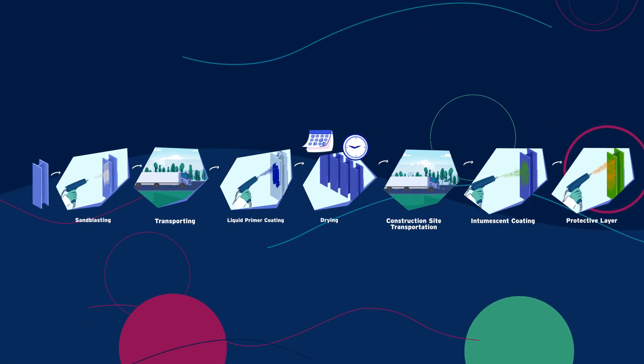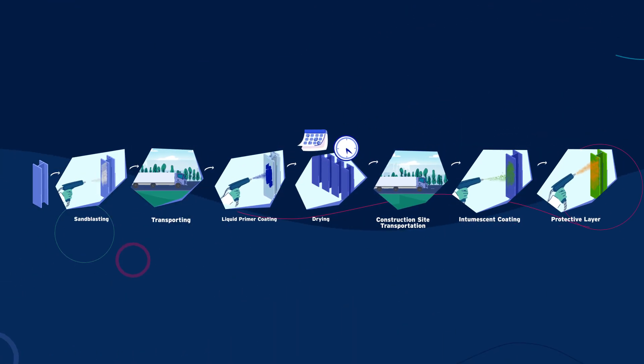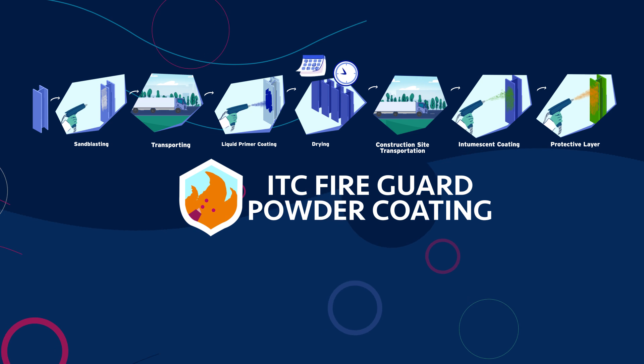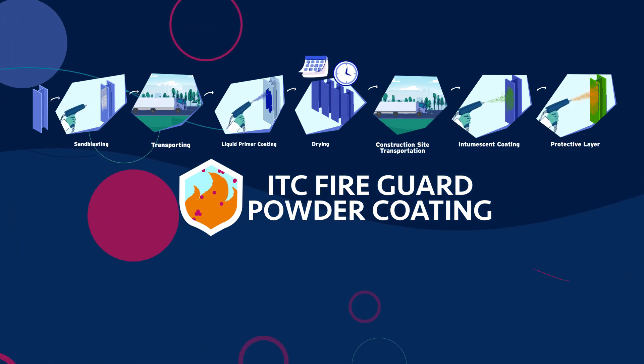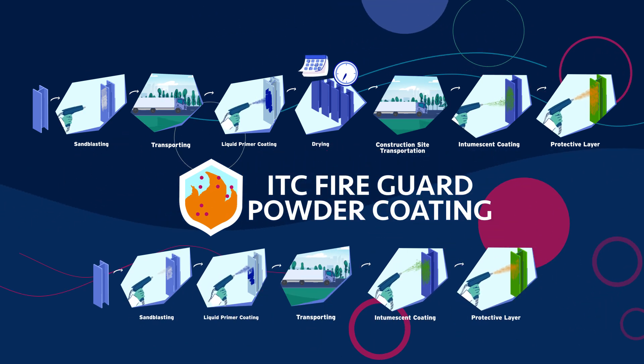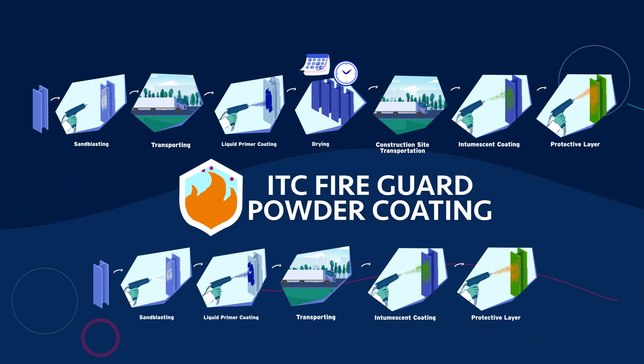After drying, the intumescent coating and finally the protective layer are applied. You can use Pulver ITC FireGuard powder coating instead of liquid coating for steel coatings to expedite the production process and reduce your carbon footprint.